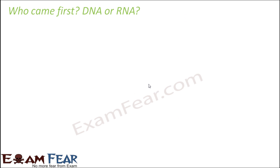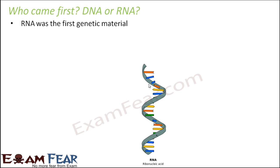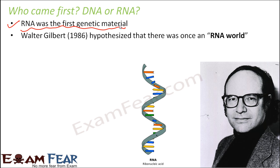An interesting question: who came first — DNA or RNA? RNA was actually the first genetic material. Even though DNA is the preferred genetic material in most organisms today, except for a few exceptions like viruses, the truth is that RNA was the first genetic material. A famous scientist named Walter Gilbert, around 1986, gave a hypothesis saying that once upon a time there existed something called the RNA world, where no DNA existed — it was all RNA.